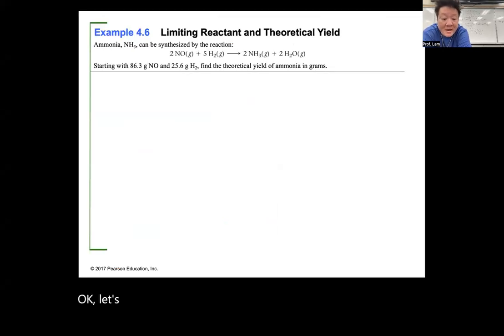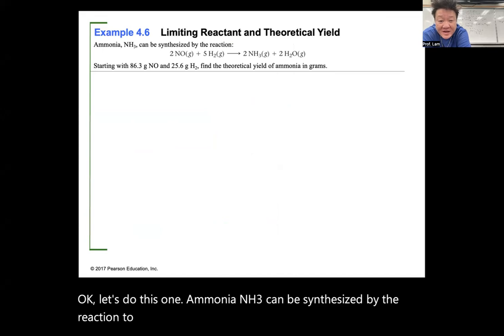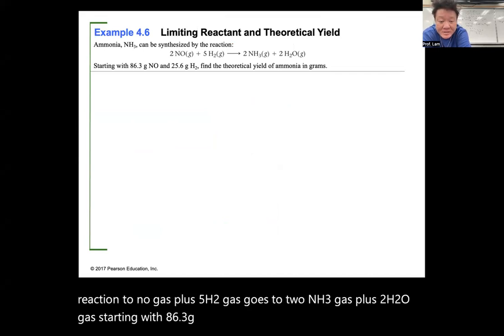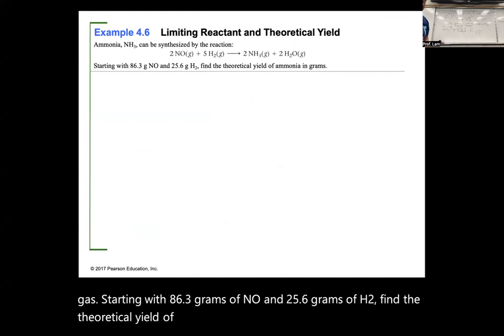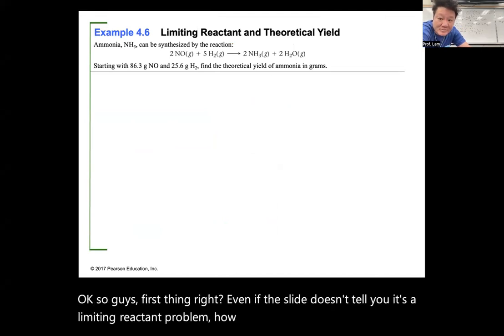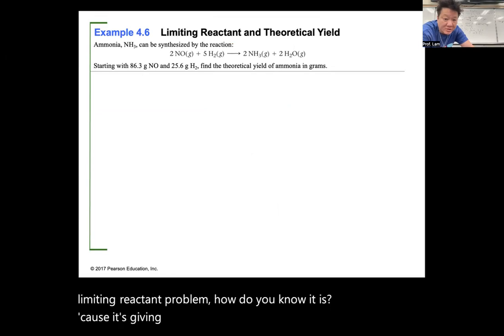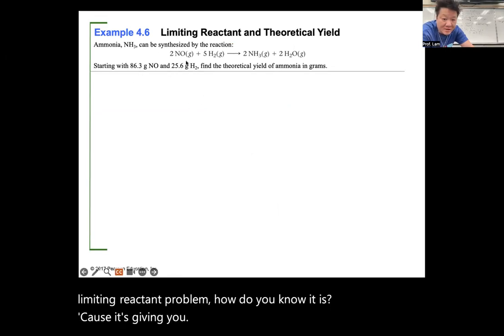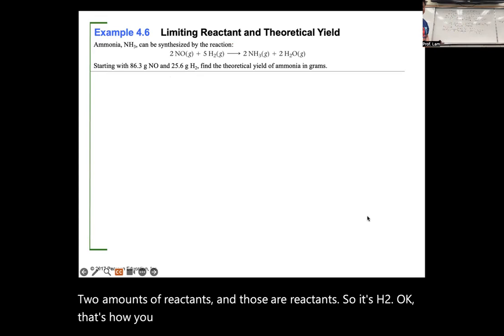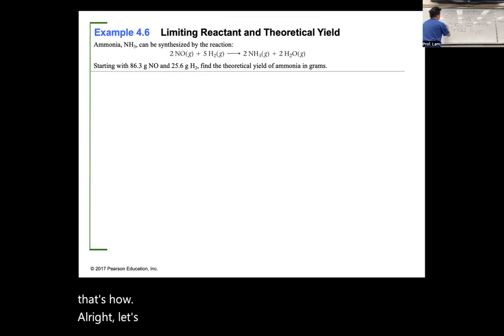Another problem: ammonia NH3 can be synthesized by 2 NO(g) + 5 H2(g) → 2 NH3(g) + 2 H2O(g). Starting with 86.3 g of NO and 25.6 g of H2, find the theoretical yield of ammonia. Because two amounts of reactants are given, this is a limiting reactant problem.